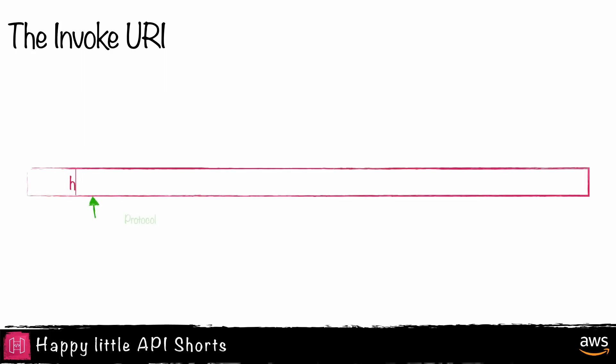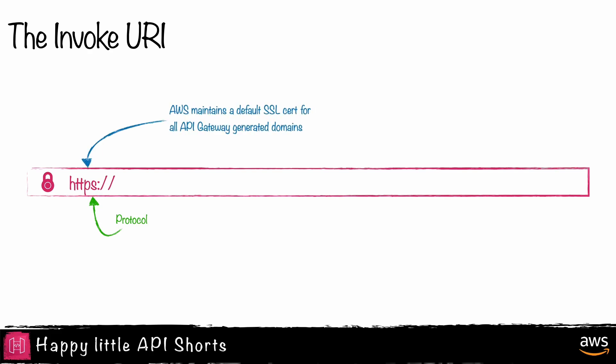The first part is the protocol, which is always HTTPS. This ensures the communication between the client and the API is encrypted. AWS maintains a default SSL cert for all API Gateway generated domains.